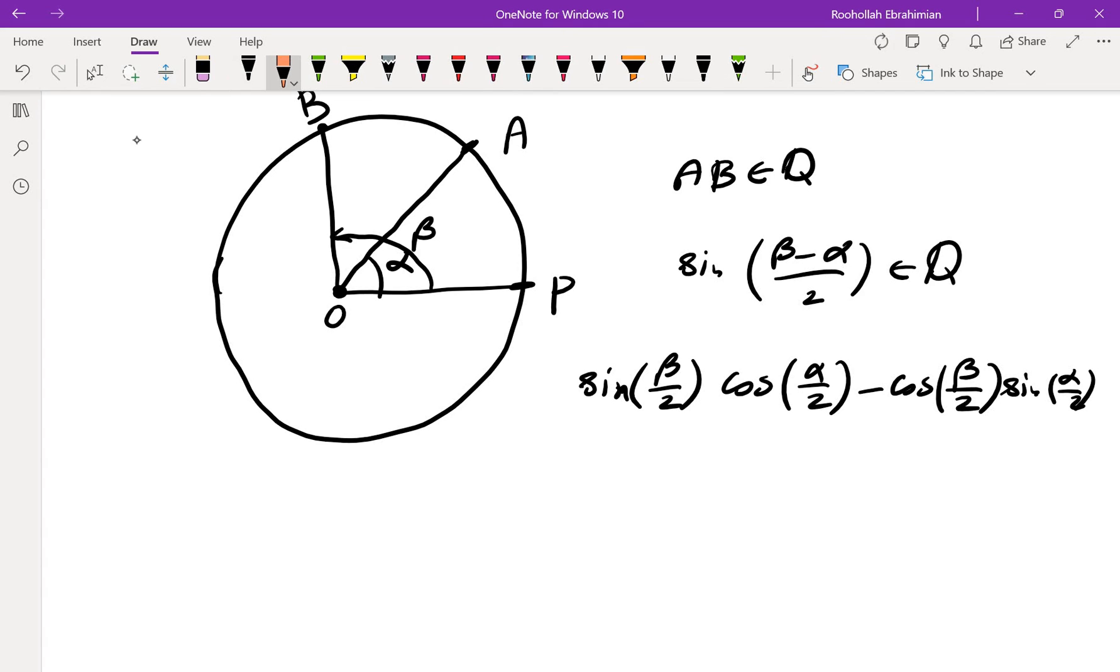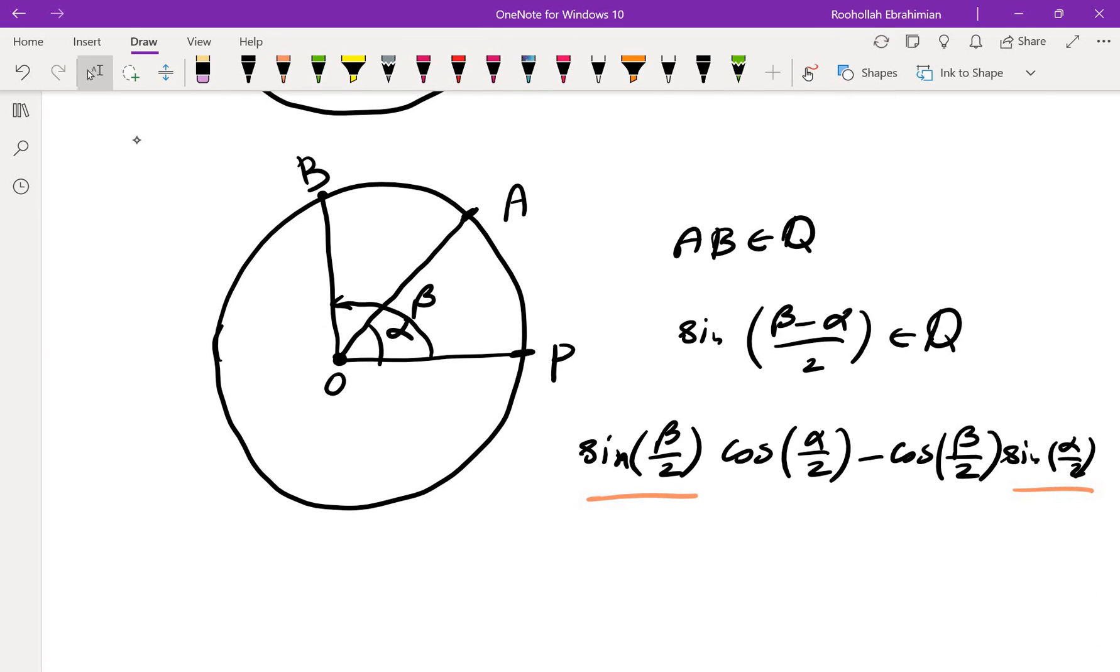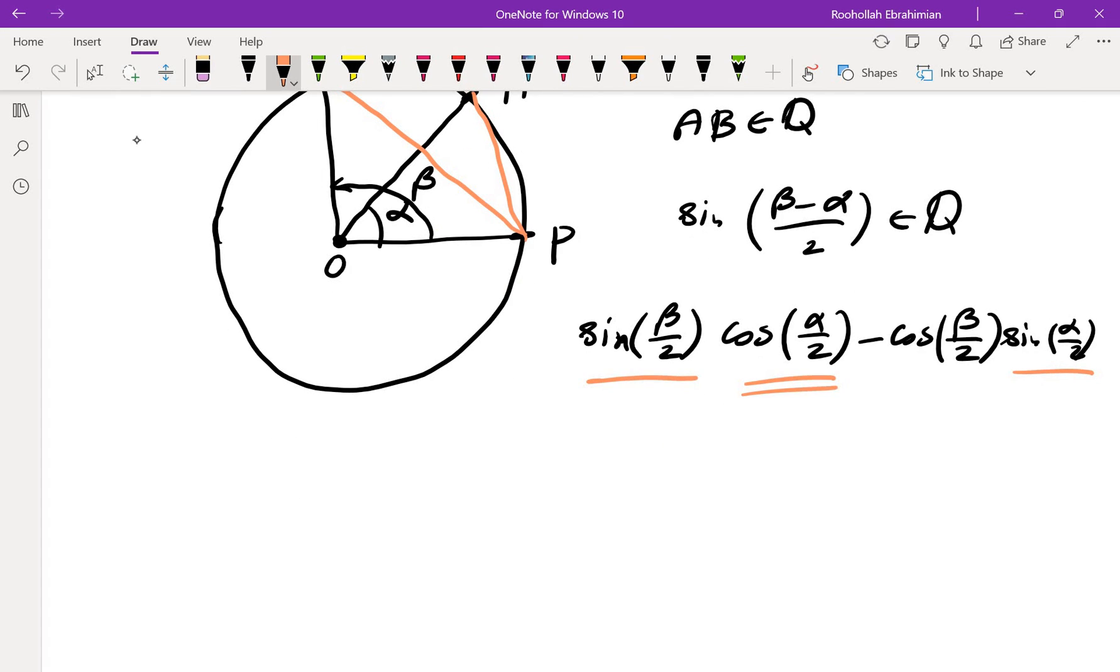Now I know that sine of beta over 2 and sine of alpha over 2 are rational, we chose them this way because we want to make sure that PA and PB are rational. If we also make sure that the cosines are rational, then we are done.